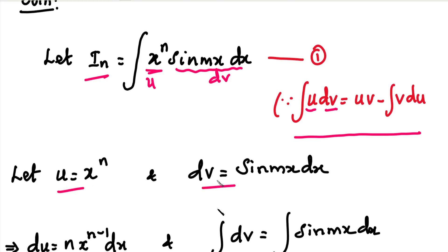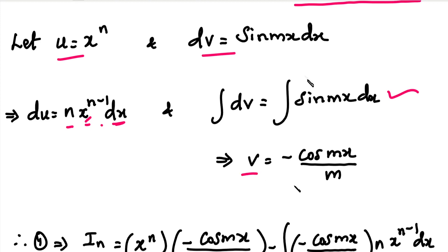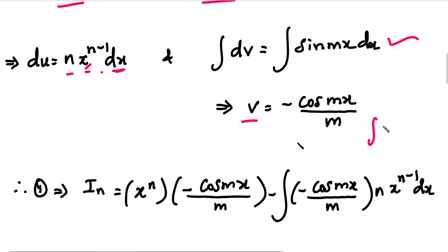From these two assumptions, we will find du and v. To find du, we differentiate both sides. The left-hand side differential value is du. On the right-hand side, differentiating x power n gives n x power n minus 1 dx. For v, we integrate dv: integral of sin mx dx equals minus cos mx divided by m.